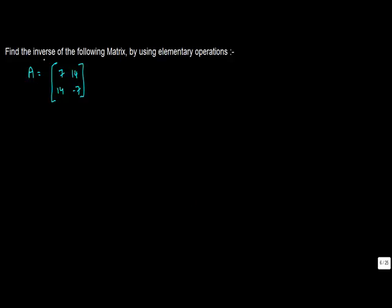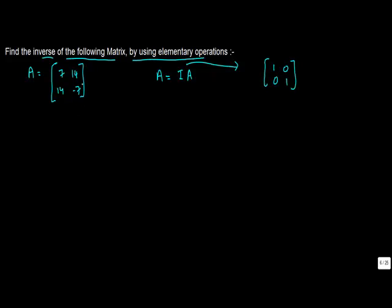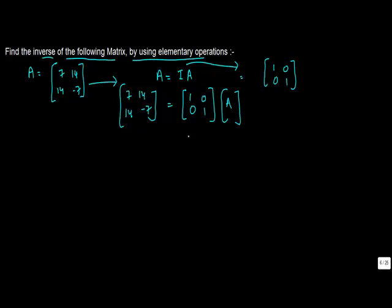In this question, you've been asked to find the inverse of the following matrix by using elementary operations. So you have A is equal to the matrix [7, 14; 14, -7]. To do that, you have to apply operations to the various rows and columns to achieve the inverse. We write this as A = IA, where I is the identity matrix of the same order. Putting in the values, we get [7, 14; 14, -7] = [1, 0; 0, 1] * A.